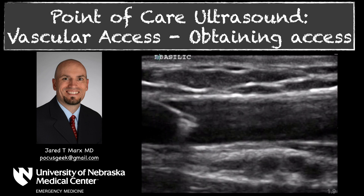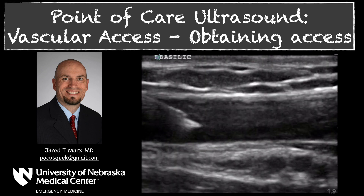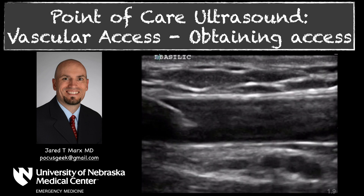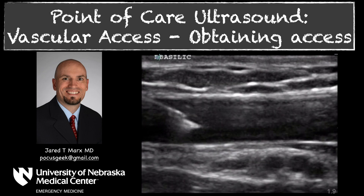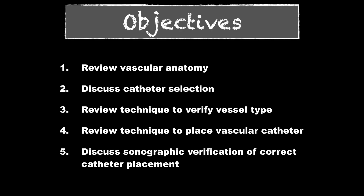This is part two. The first part was identifying the correct vessel and focusing mostly on identifying the correct vein. We're going to continue along our objectives and start looking at the technique used to place a vascular catheter and how to verify that it's in the vein. In the first lecture, if you haven't had a chance to watch that, I'd recommend going back and doing that — we discuss objectives one through three.